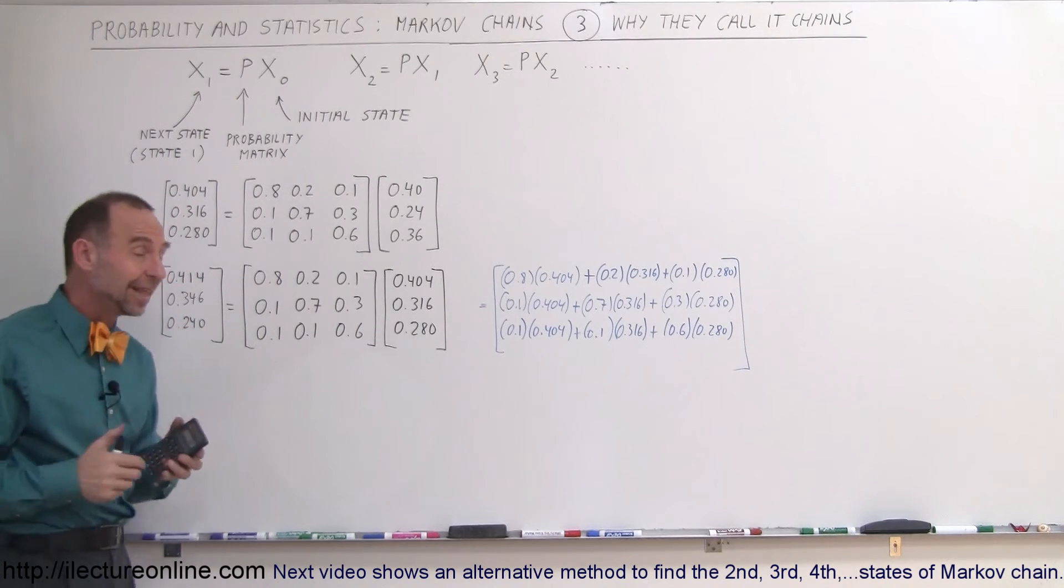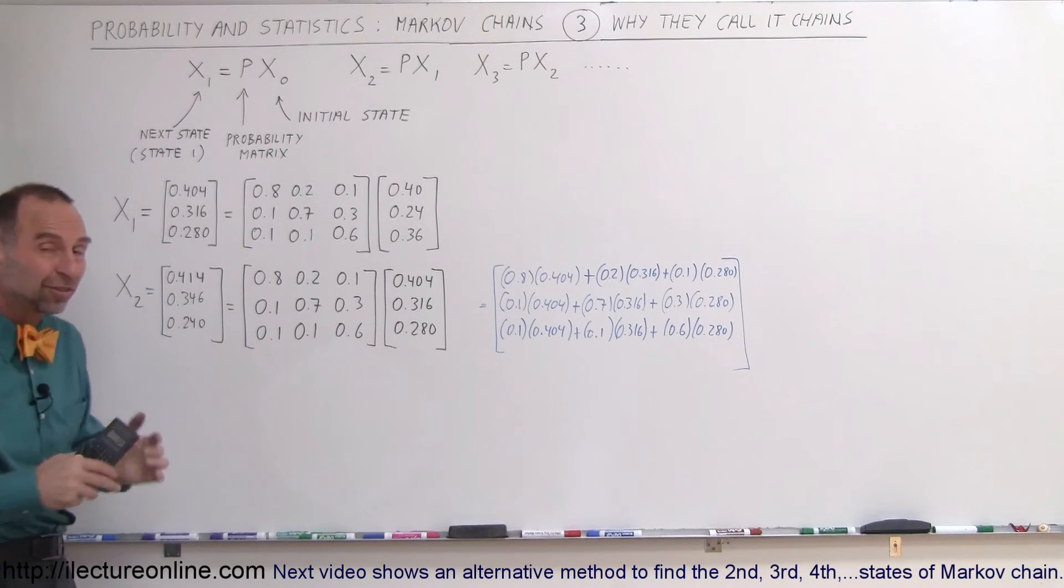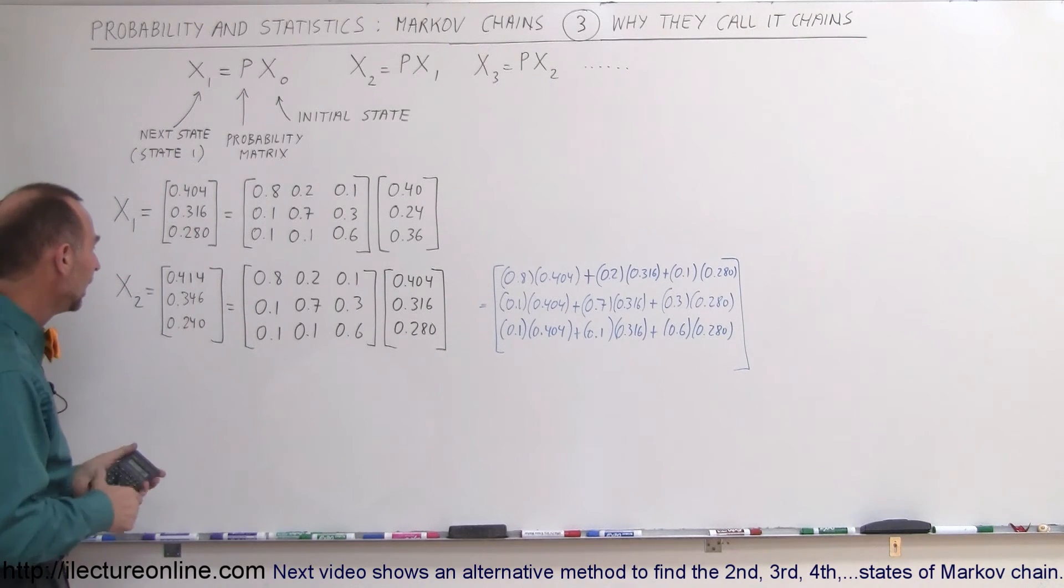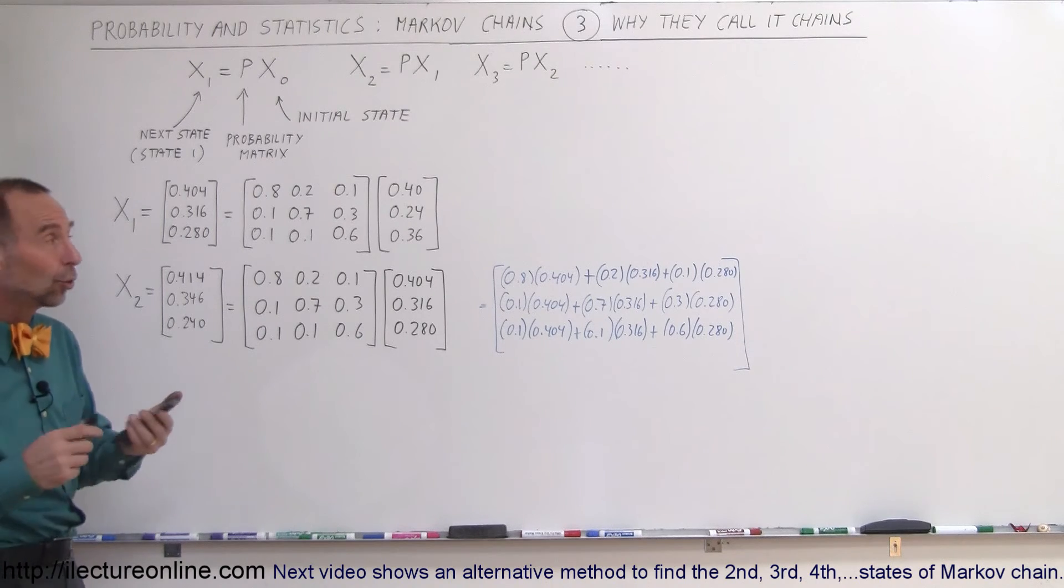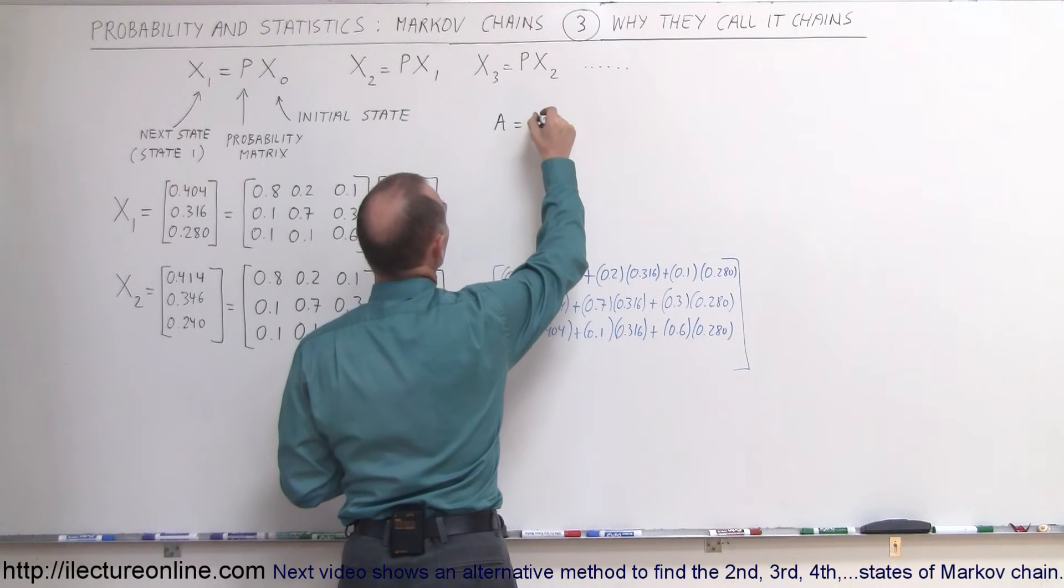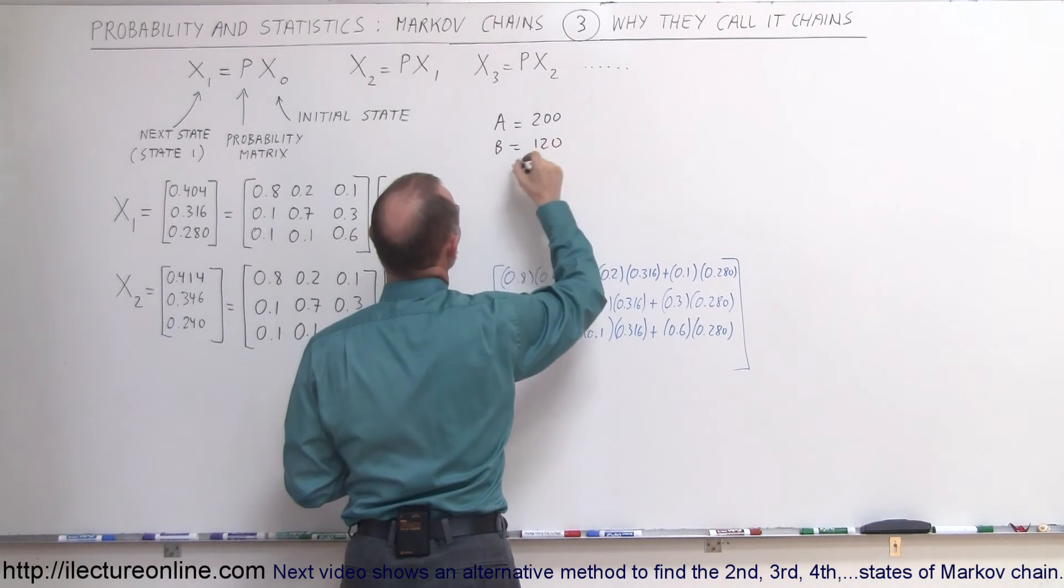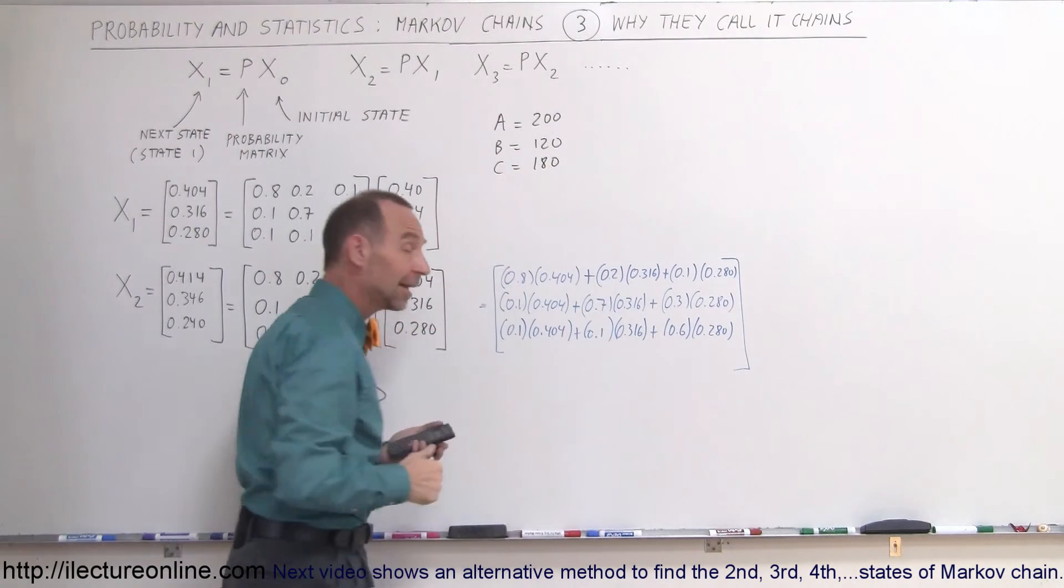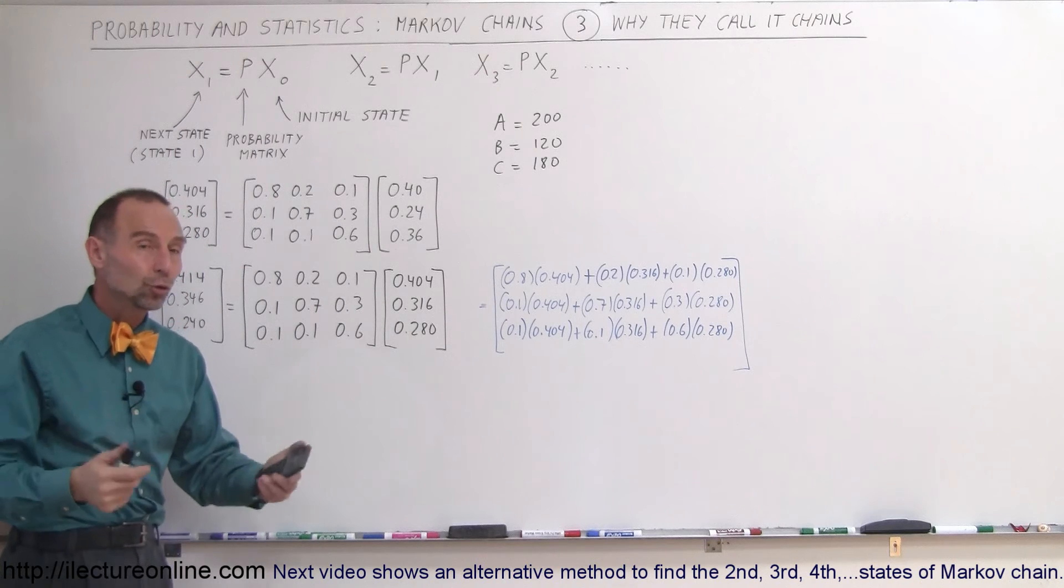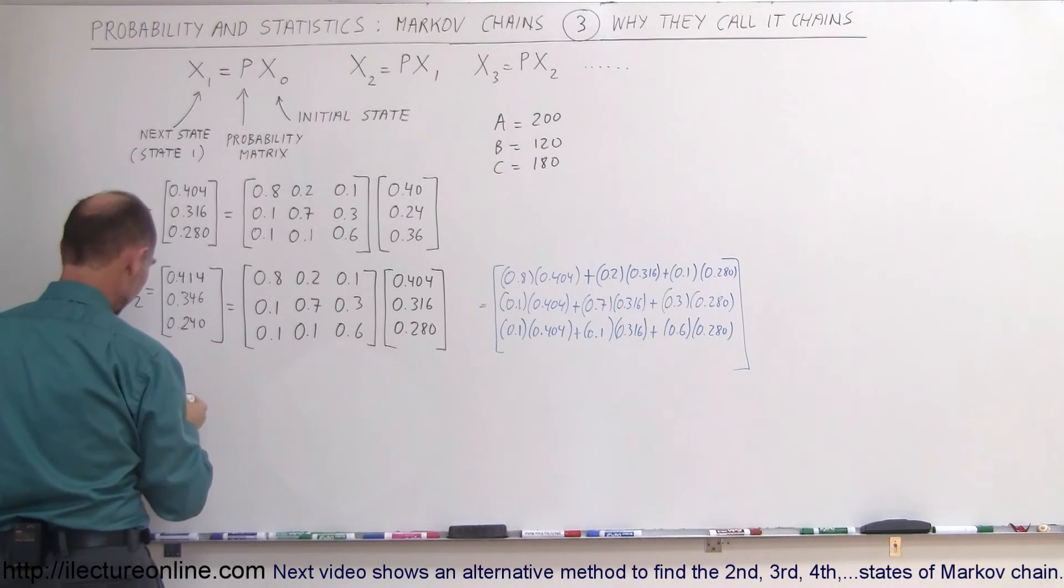Now you can see that this would be the number of customers attending store A, store B, store C as a percentage of the whole or as a fraction of the whole. If we multiply that times the total number of customers, remember that we started with A having 200 customers, B having 120 customers, and C having 180 customers. Let's see how that changed after two weeks.